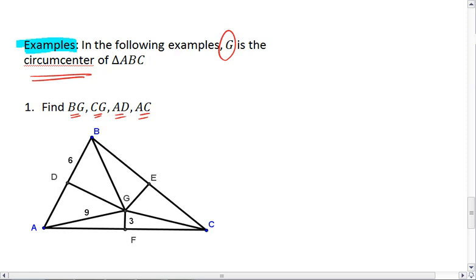Okay, first things first, as soon as you hear that you have a circumcenter, you know that that circumcenter is equidistant from the vertices. Meaning that AG is 9, BG is 9, and CG is also 9.